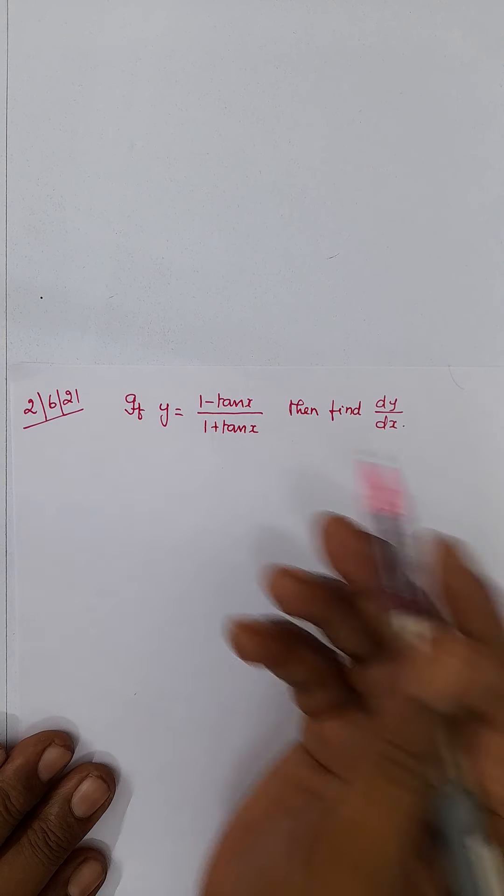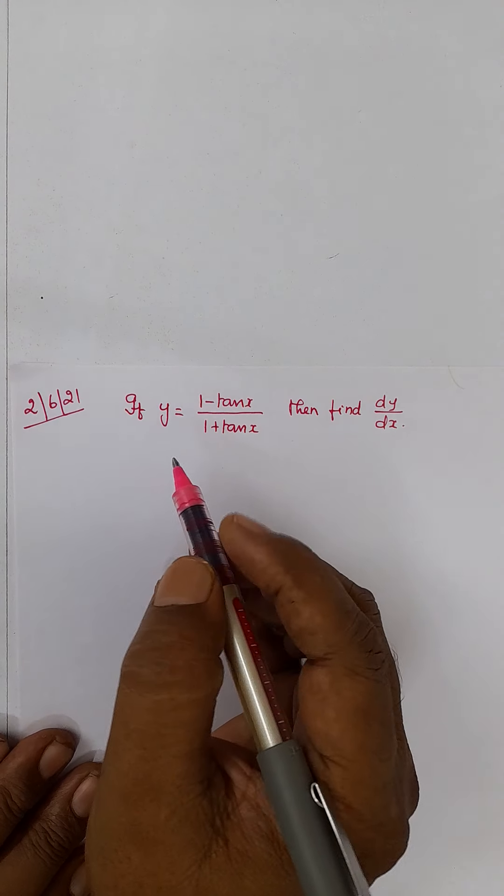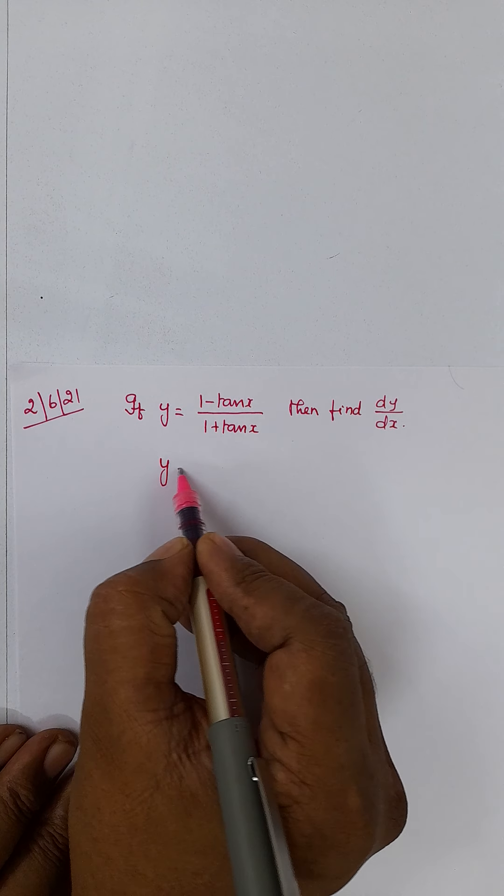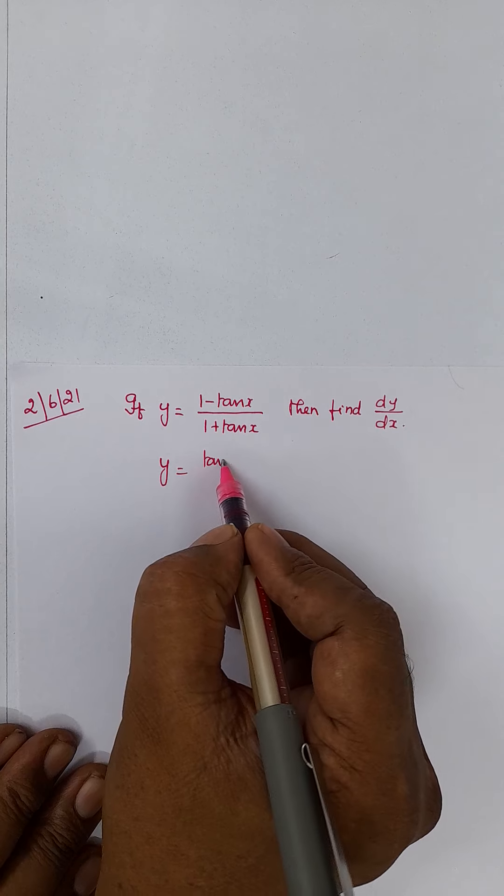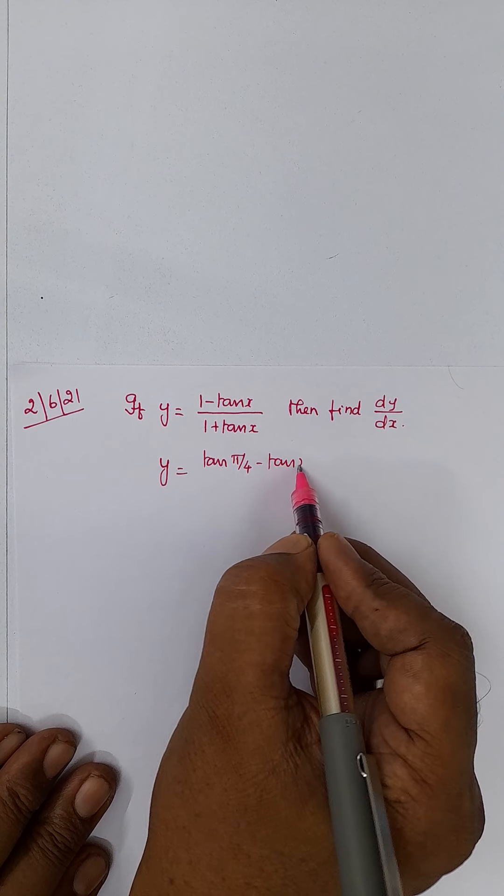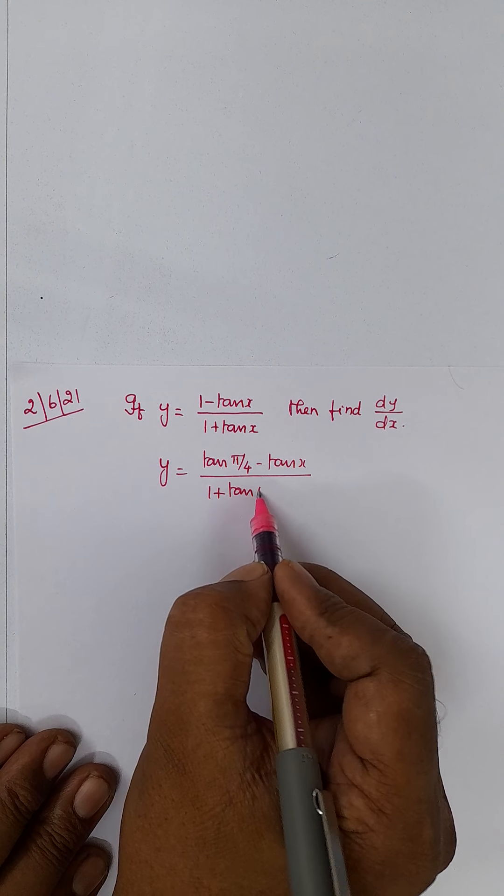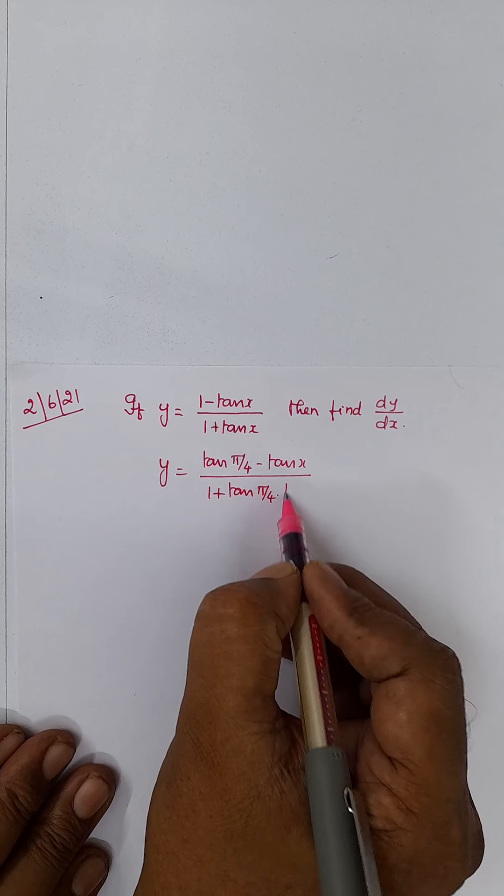Let me take instead of 1, I am going to write tan pi by 4. So, y is equal to tan pi by 4 minus tan x divided by 1 plus tan pi by 4 into tan x.